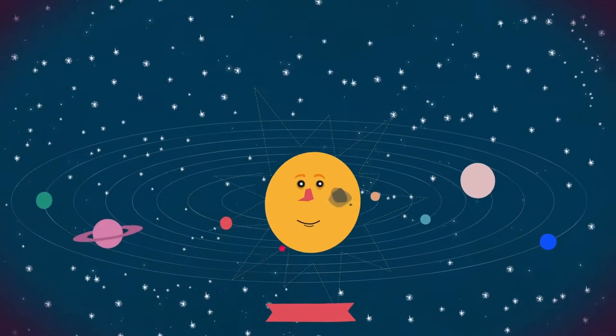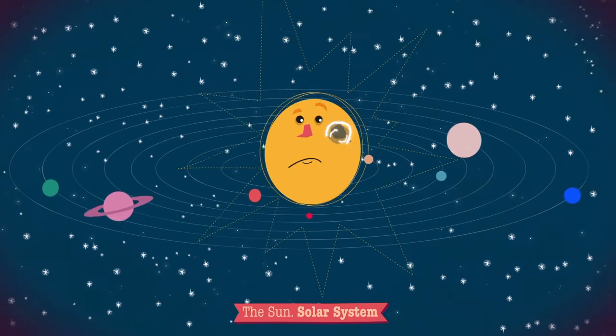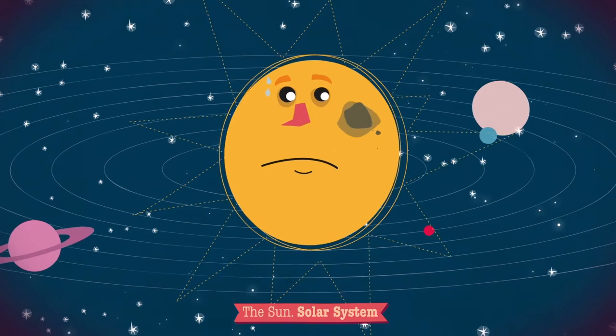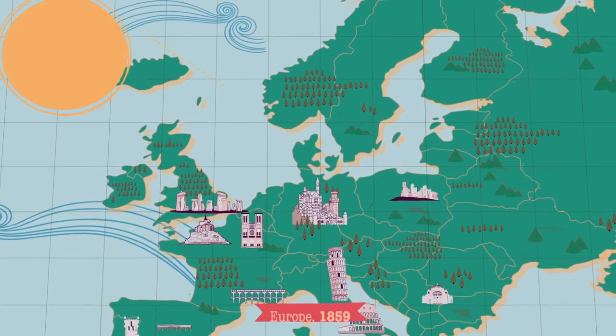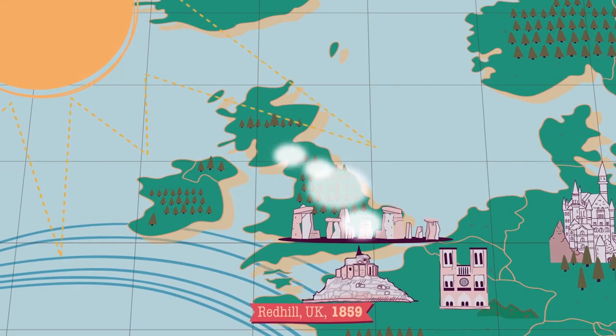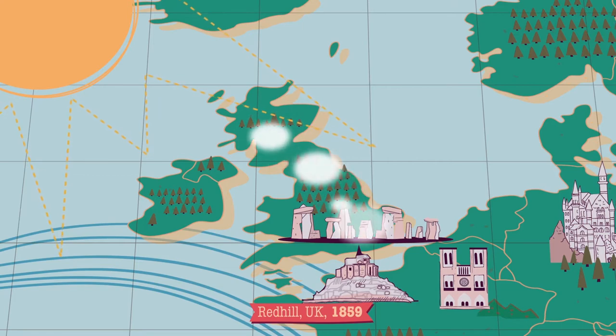En el Sol, a menudo ocurren unos eventos explosivos llamados fulguraciones. Se observaron por primera vez en Inglaterra a mediados del siglo XIX. Richard Carrington fue el primero en identificar este fenómeno en 1859 desde el Observatorio Redhill, al sur de Londres.